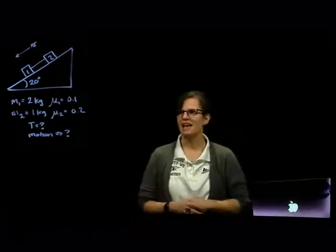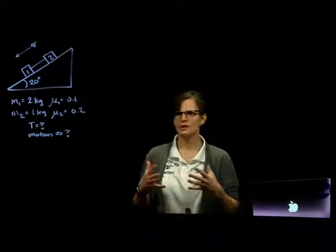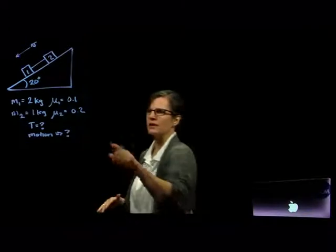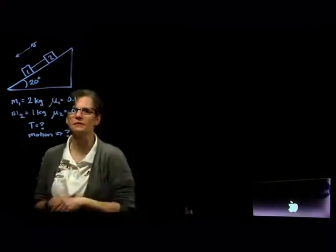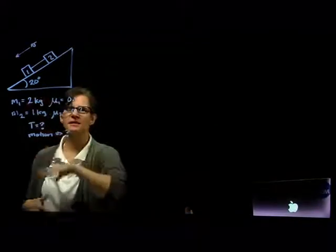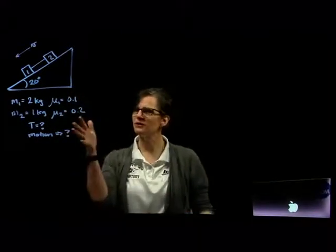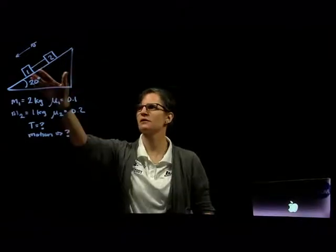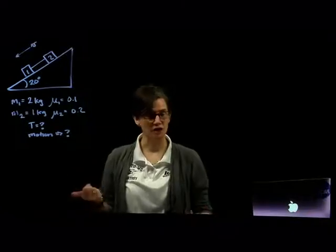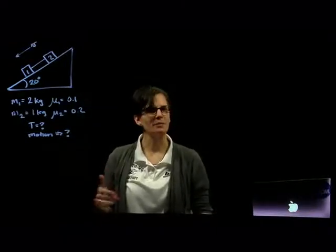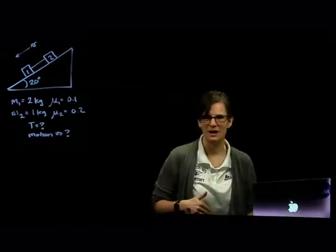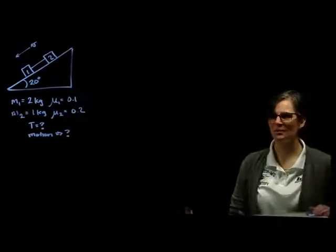We're going to look at a problem about the motion of two blocks sliding down a ramp. We have two blocks on a ramp at 20 degrees with respect to the horizontal. They're connected by a massless string. The masses are given. There is friction on the ramp, but they're different materials, so the coefficients of friction for the first block and the second block are slightly different. We need to find the tension in the string and determine whether the object is speeding up, slowing down, or moving at a constant rate as it moves down the ramp.